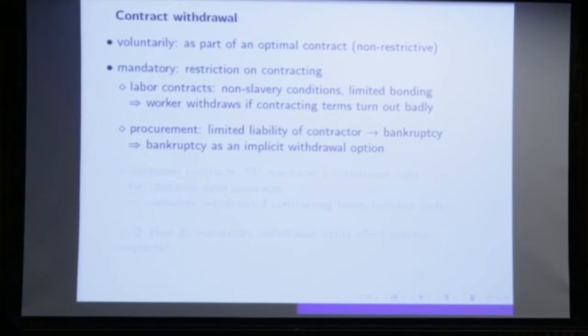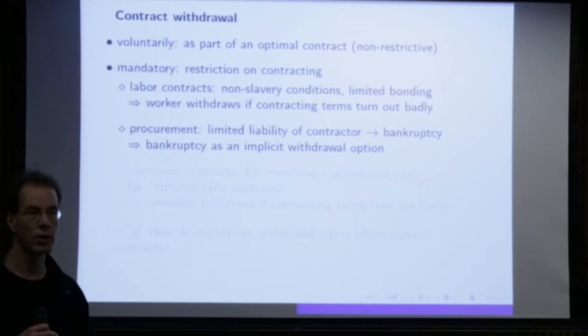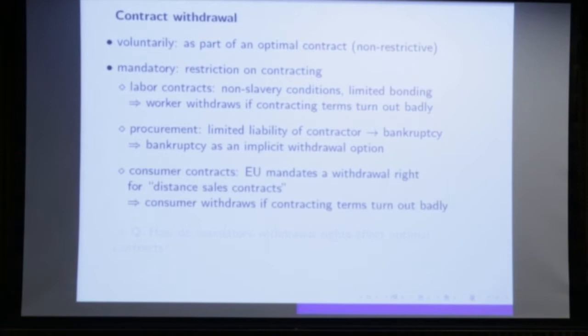In procurement contracts, when the contractor is a firm protected by limited liability, there is always the risk that the firm may go bankrupt. From the procurer's perspective, this looks like an exit option — a sort of withdrawal right of the contractor. Today I will focus on withdrawal rights in the context of consumer contracts, though the other two examples fit our story as well.